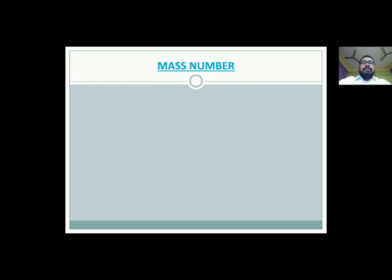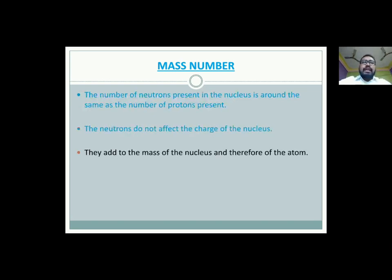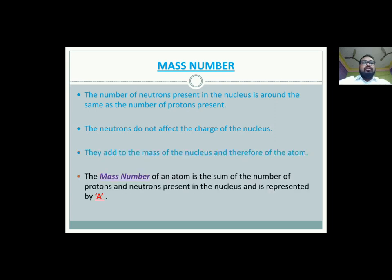Next we have mass number. The number of neutrons present in a nucleus is around the same as the number of protons present. The neutrons do not affect the charge of the nucleus as they are neutral. However, they add to the mass of the nucleus and therefore of the atom. A neutron has about the same mass as a proton that is 1 amu, atomic mass units. More than one element can have the same number of neutrons. The mass number of an atom is the sum of the number of protons and neutrons present in the nucleus and it is represented by the capital letter A.